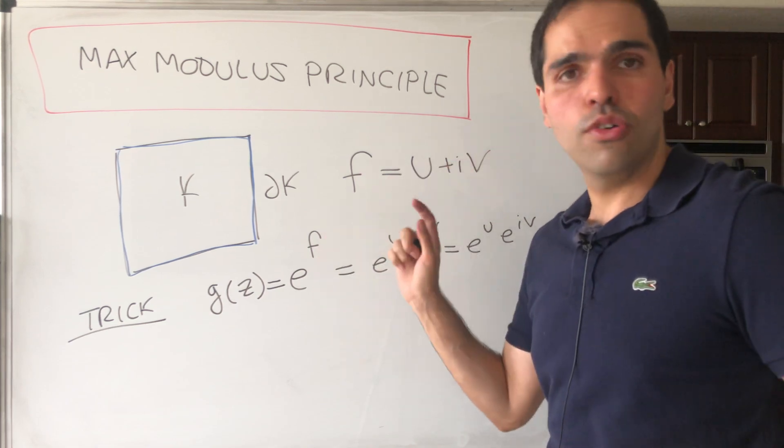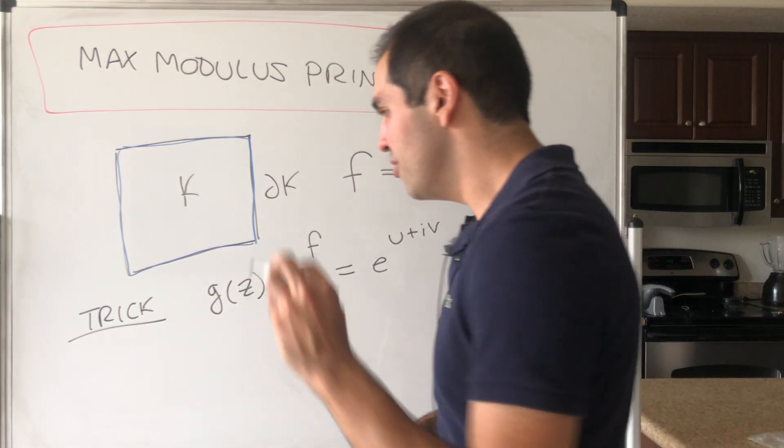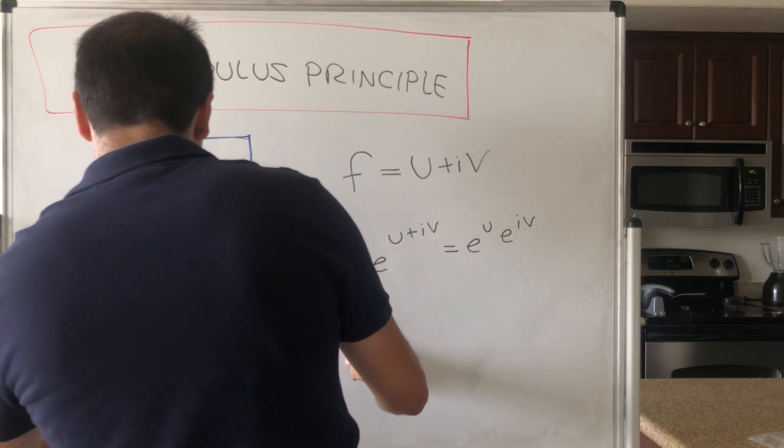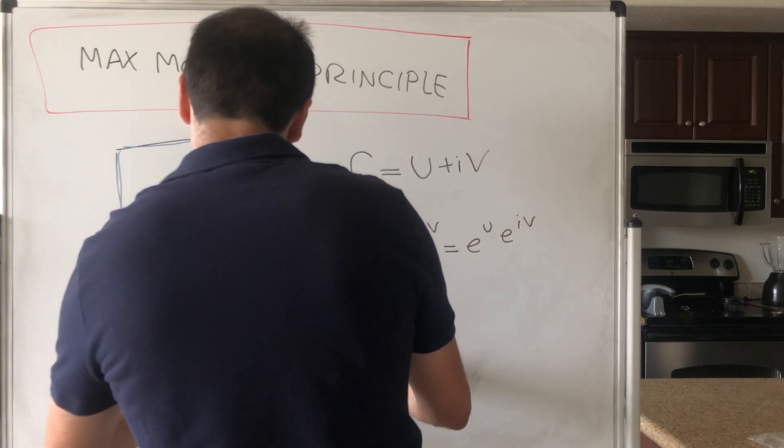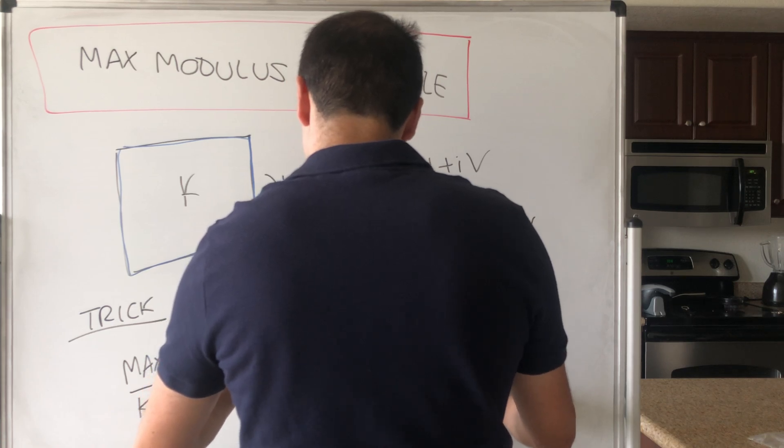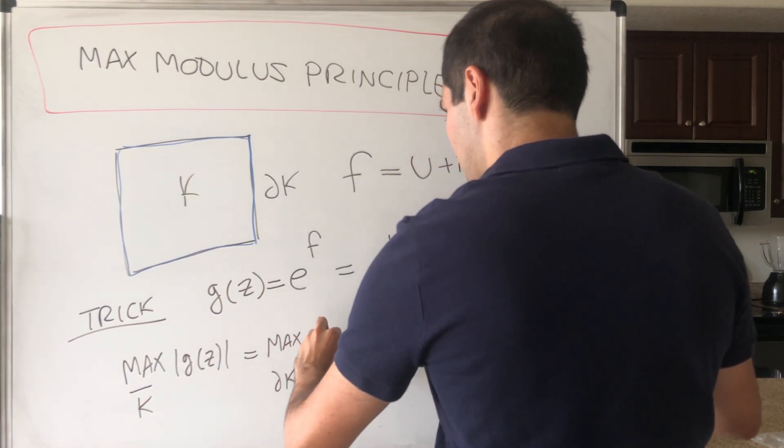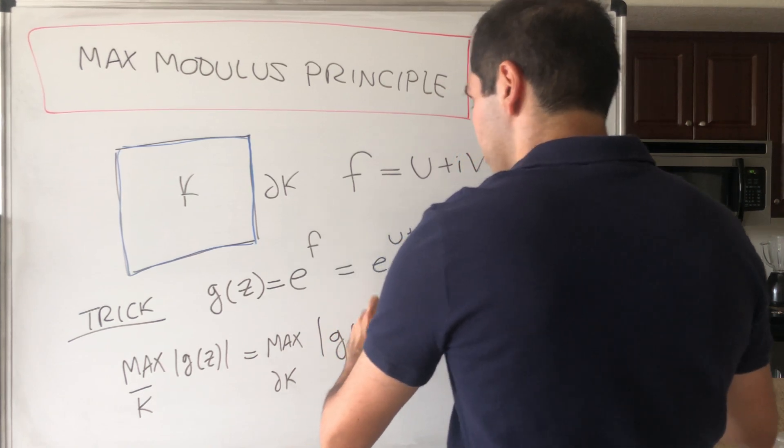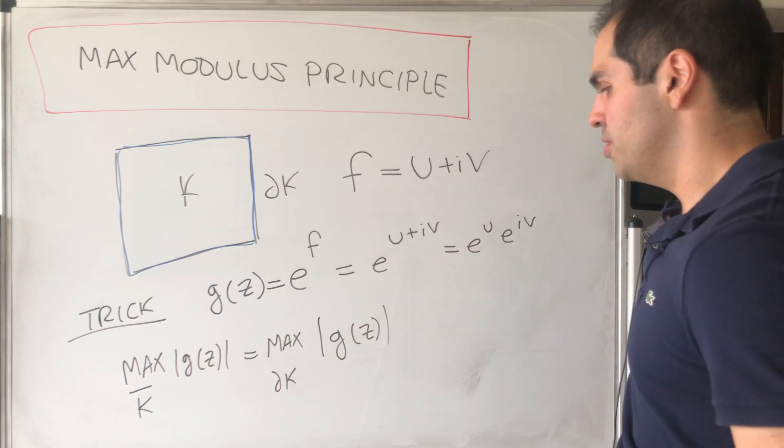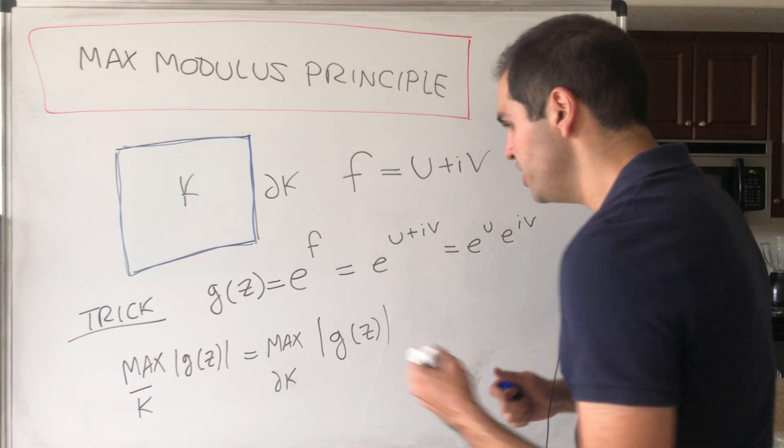Then, while f is holomorphic, g is also holomorphic by the chain rule. So by the maximum modulus principle, we know that the maximum value of the absolute value of g on the whole set is just the maximum value of g—absolute value of g—but on the boundary. So the maximum value on the whole set is the maximum value on the boundary, and what is the absolute value of g?